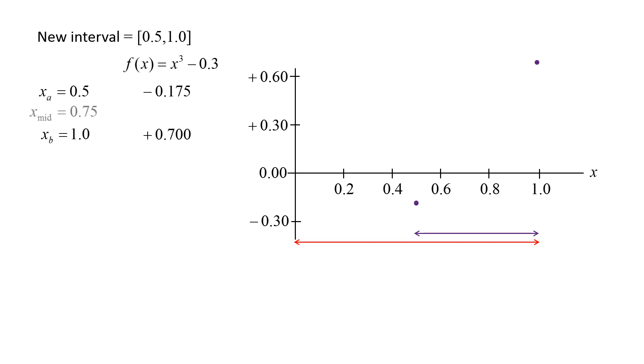We calculate the midpoint between 0.5 and 1, which is 0.75, and assign it to xmid, then calculate the function at xmid, which is approximately positive 0.122. Since the sign of the function changes between xa and xmid, we can discard the right half of the interval.